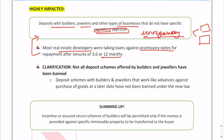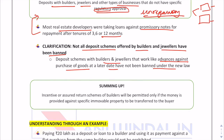Not all deposit schemes offered by builders and dwellers have been banned. Deposits for business are not banned — only the business of accepting deposits is banned. For example, deposit schemes with builders and dwellers where advances are taken against the purchase of goods at a later date — such as a builder taking credit from an investor against a specific immovable property to be transferred to the buyer — are not banned.